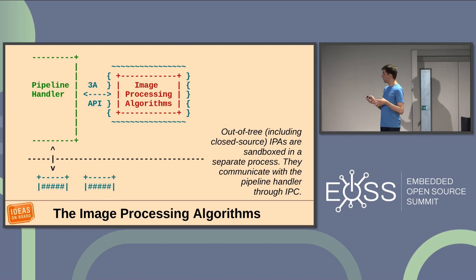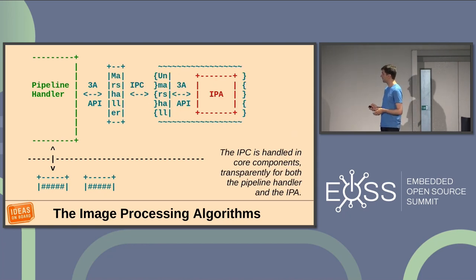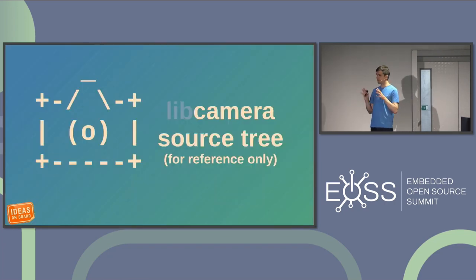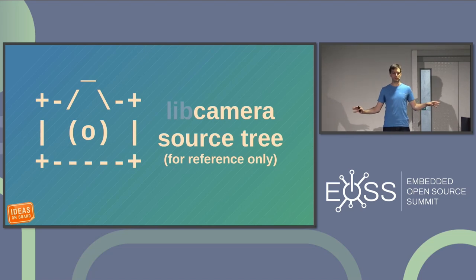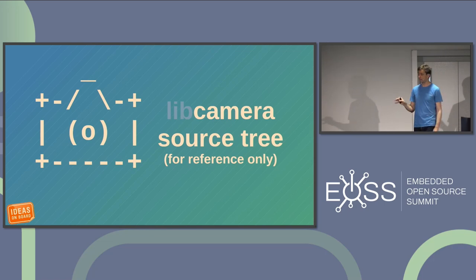If IPA modules are closed source, they are sandboxed and can only communicate with the pipeline handler. There's a whole IPC system to handle that. And now that you're familiar with libcamera, we're going to dive into the bulk of the talk: how do you add support for your new platform?